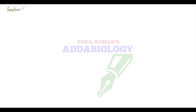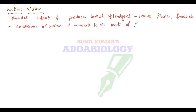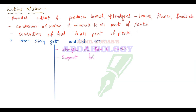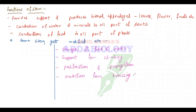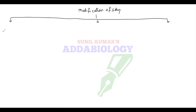Let's see the functions of stem. It provides support, protects the lateral appendages — that is leaf, flower and fruit — and is responsible for conduction of water and minerals to all parts of the plant. It conducts food to all parts of the plant by phloem. Some stems under unfavorable conditions get modified for storage of food, support for climbing, proliferation, protection from browsing animals, or perennation — meaning survival.